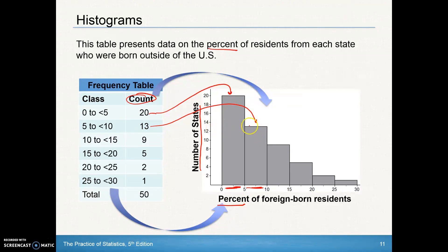And it's 13 in the second class from 5 to less than 10. So just making sure that we make the bars the same width. Make sure the height accurately represents that. And the bars do touch.